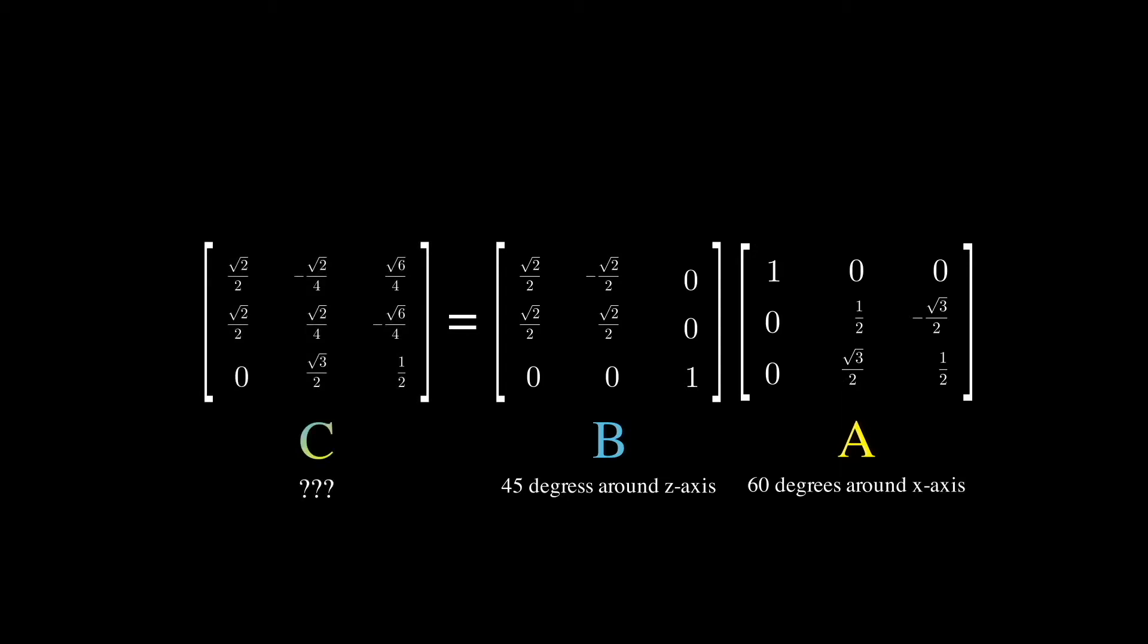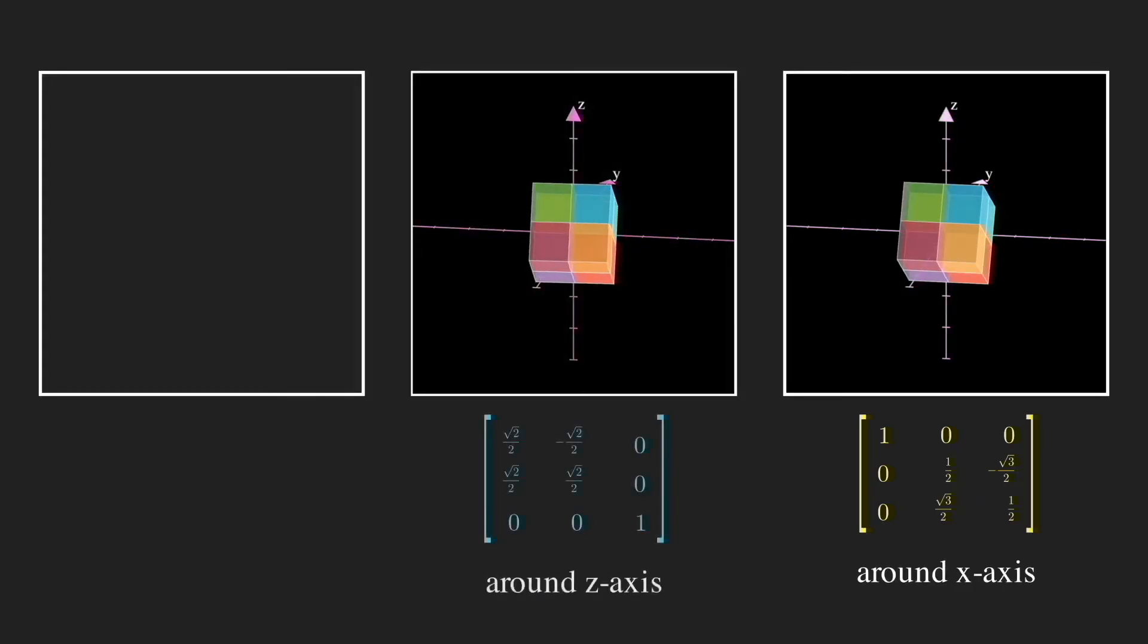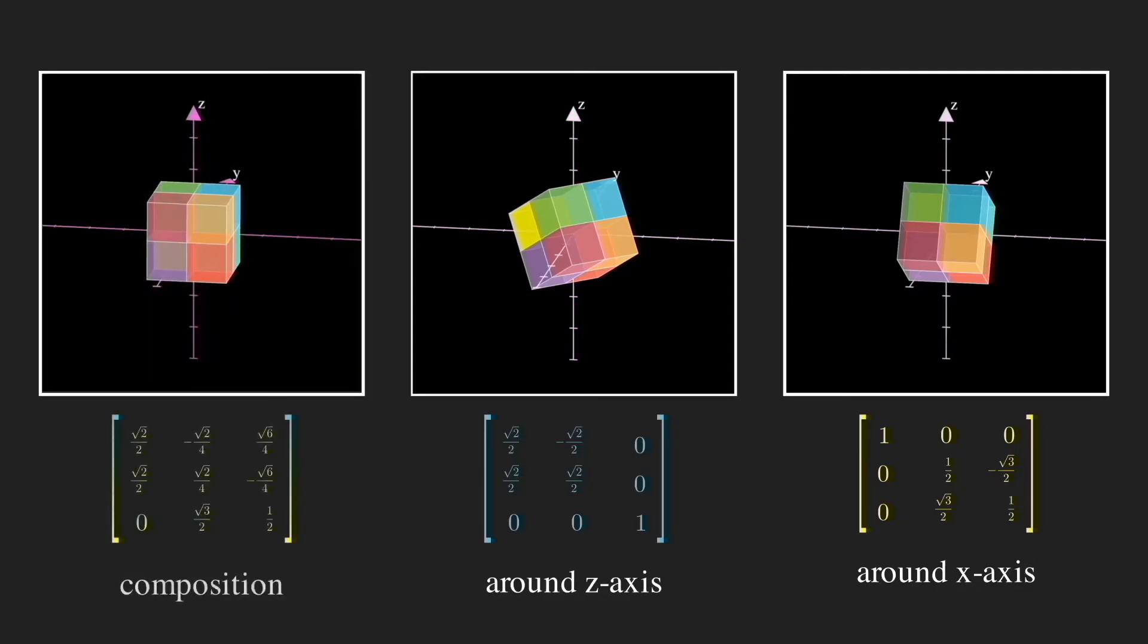If I multiply those two matrices together to get a matrix C, what do you think C is going to do? Well, let's see. Firstly, around x, and immediately around z. Since our matrix C is a composition of the two, like you guessed it, it encapsulates the two sequential transformations, but in just one rotation.